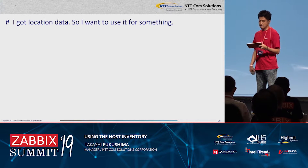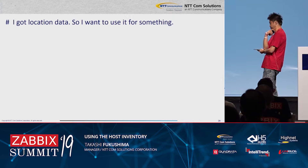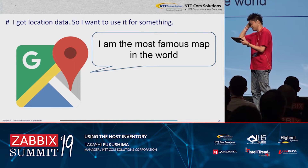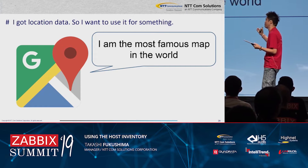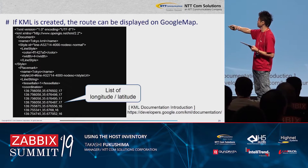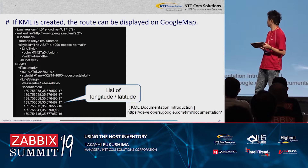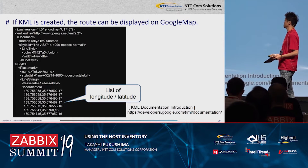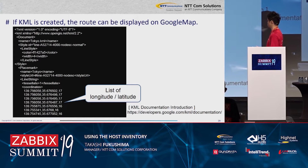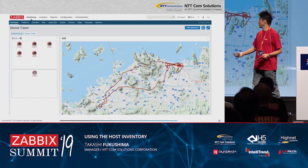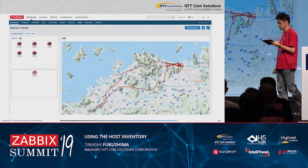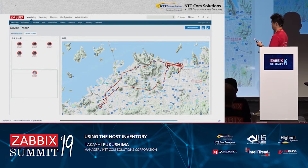I got location data, so I wanted to use it for something. At that time, an idea came to my mind: 'I am the most famous map in the world.' If KML is created, the route can be displayed on Google Maps. This is KML — Keyhole Markup Language. I tried to embed Google Maps in the Zabbix dashboard, and the travel history is also drawn on the map.